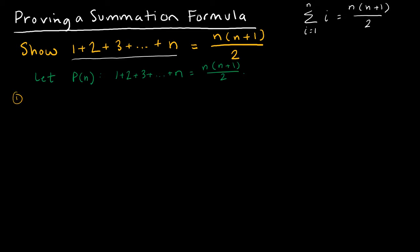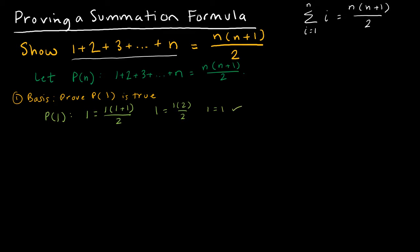Then I'm going to do my basis step. The basis step says prove p of 1 is true — prove I can get to the first rung of the ladder. In this case, p of 1 would actually be 1. So p of 1 would be: 1 equals 1 times 1 plus 1 over 2, and I have to verify that's true. On the left side I have 1, on the right side I have 1 times 2 over 2, so I get 1 equals 1, which is true. So I've proved the basis step.